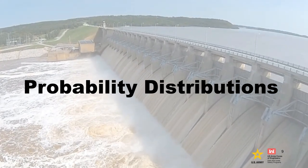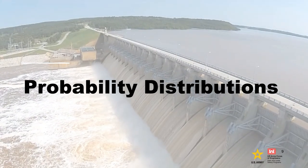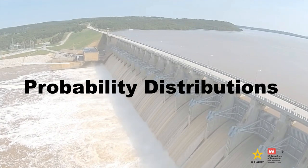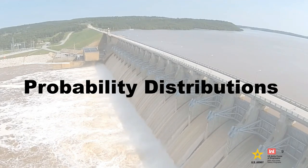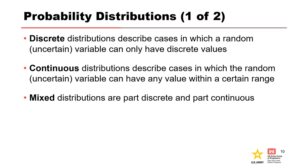How exactly do we go about modeling uncertainty? A good place to start is with probability distributions, which are used to describe the possible outcomes or possible values associated with a random variable. Probability distributions are generally divided into three types. Discrete distributions describe cases where a random variable can only have separate, countable values, like a coin flip or the roll of a die. Continuous distributions describe cases where the random variable can have any value within a certain range. Mixed distributions are part discrete and part continuous.